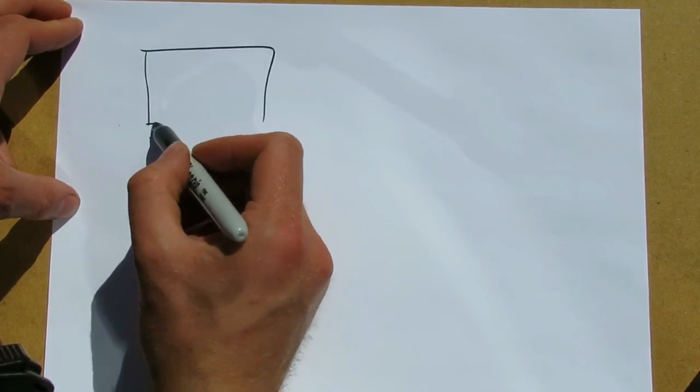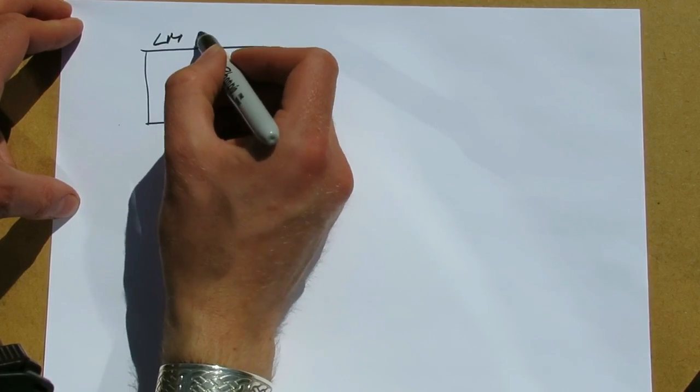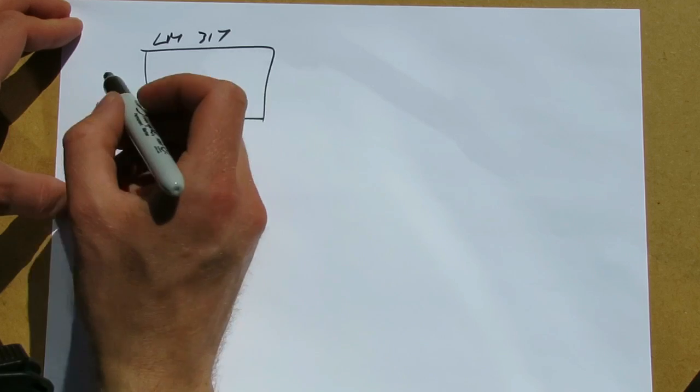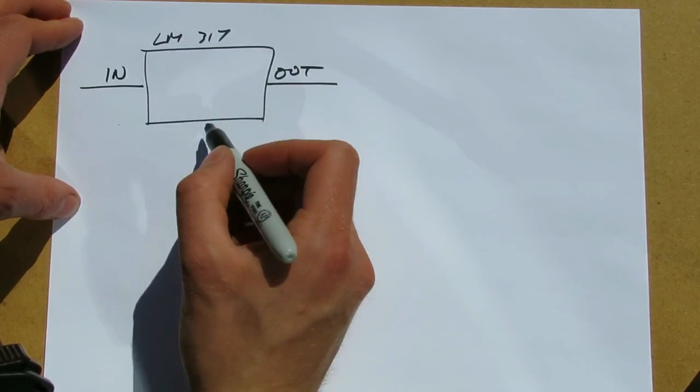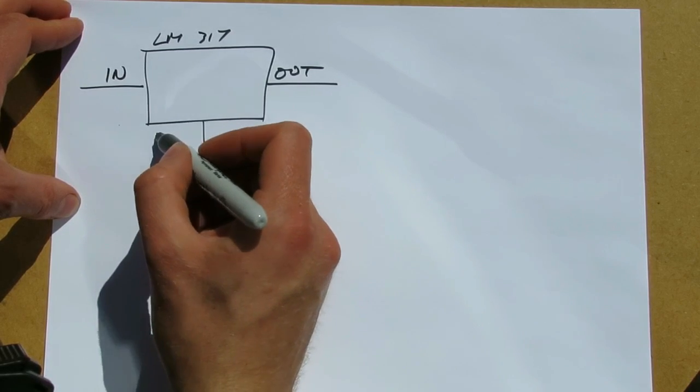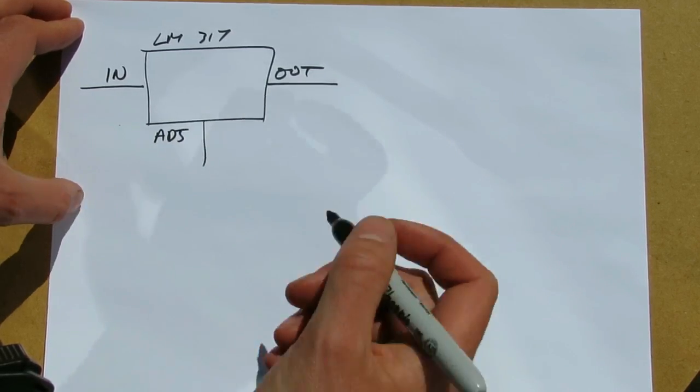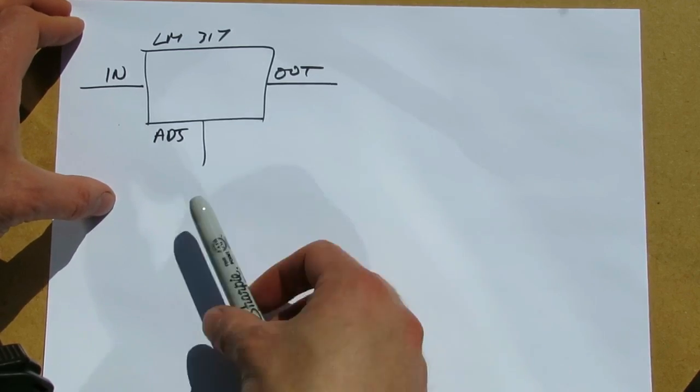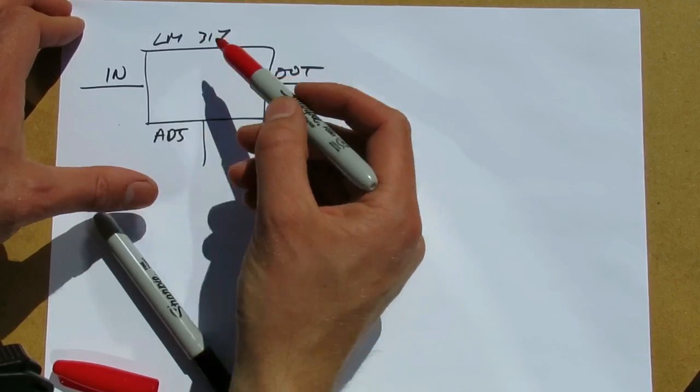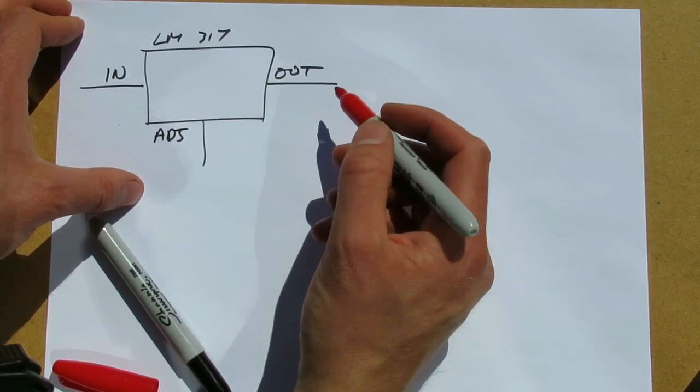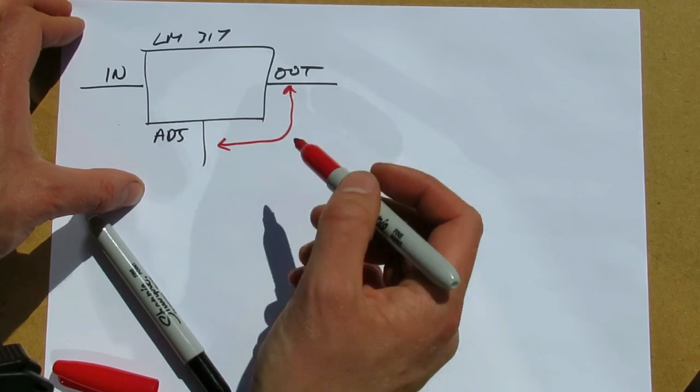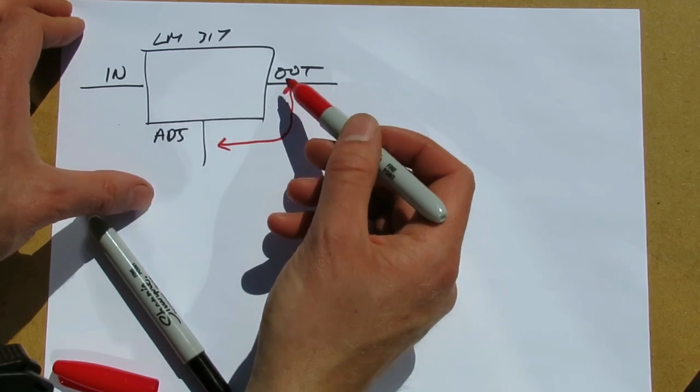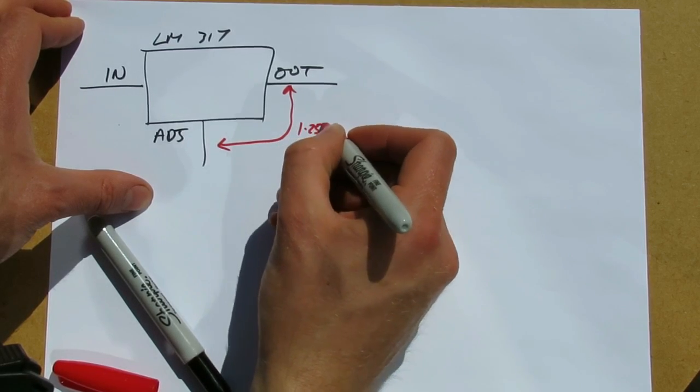The 317 regulator has three terminals: the input, the output, and what's called the adjustment terminal. In normal operation, the LM317 adjusts its output until the voltage between the adjustment terminal and the output terminal is 1.25 volts.